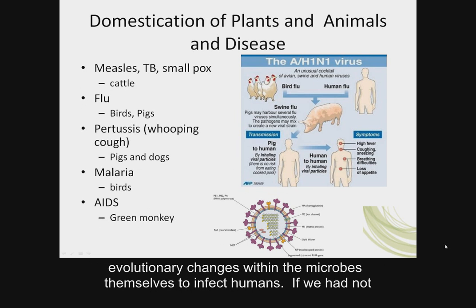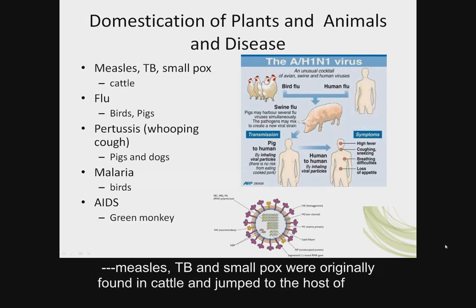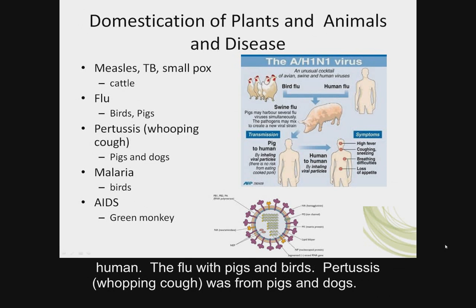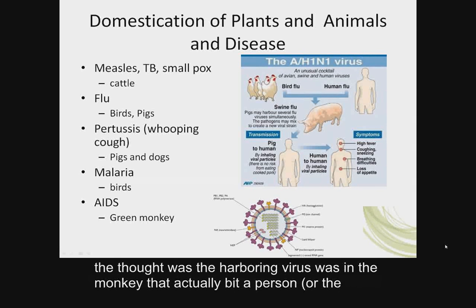If we had not domesticated animals, we would not have had as many of the plagues that we had. Measles, TB, and smallpox were originally found in cattle and jumped to the human host. The flu came from pigs and birds. Pertussis — whooping cough — was from pigs and dogs. Malaria came from birds and the mosquitoes that bit them. And AIDS came from the green monkey, with the more common idea now being that a hunter killed the monkey and accidentally cut himself while cutting up the flesh.